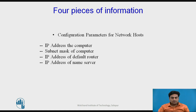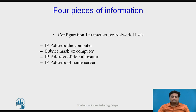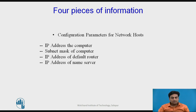Each computer which uses the TCP/IP protocol suite needs to know its IP address and subnet mask. Most computers today also need two other pieces of information: the default router and the address of the name server. In other words, the four pieces of information normally needed are: first, the IP address of the computer; second, the subnet mask of the computer; third, the IP address of a default router; and fourth, the IP address of a name server.